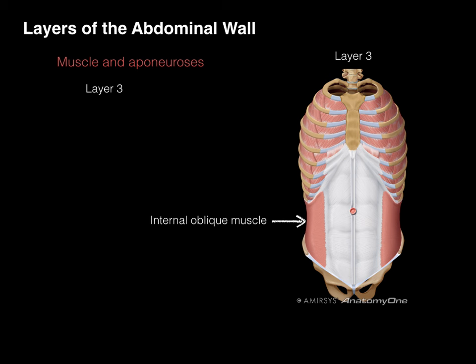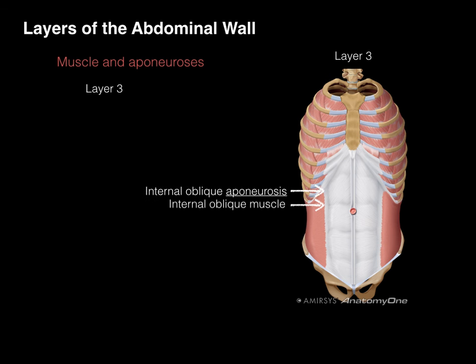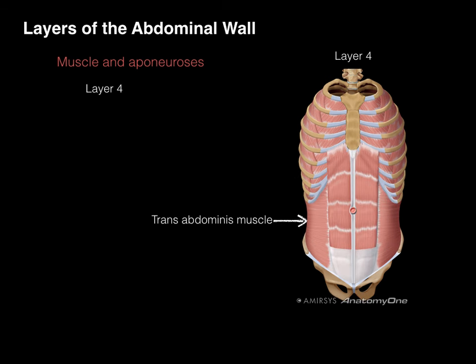Layer three is the internal oblique muscle. This muscle courses at roughly a right angle to the external oblique. When the muscle stops, the internal oblique aponeurosis courses to the midline and fuses at the linea alba. So the internal oblique aponeuroses on the right and left fuse at the midline at the linea alba.